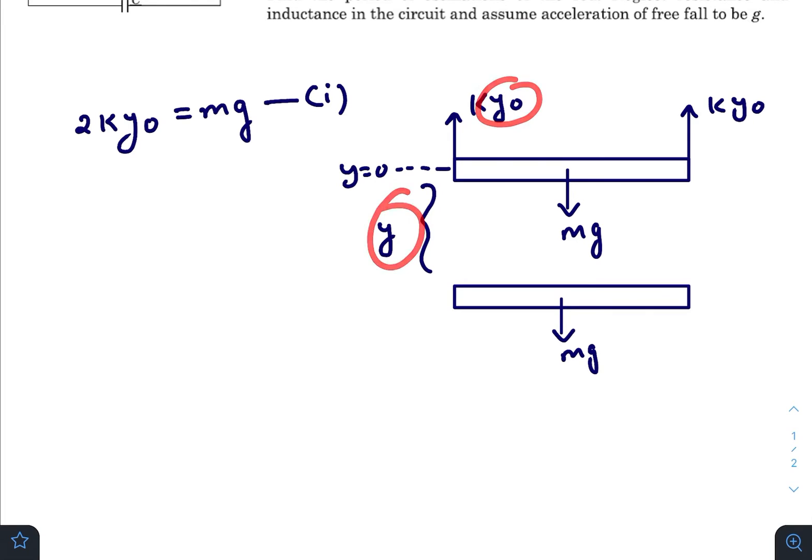At this instant the rod will have some velocity v. Due to this velocity, the conducting rod will behave as a battery with negative terminal here and positive terminal here, because there is some constant uniform magnetic field coming out of the plane of paper. We know that a moving conductor having velocity v will behave as a battery.